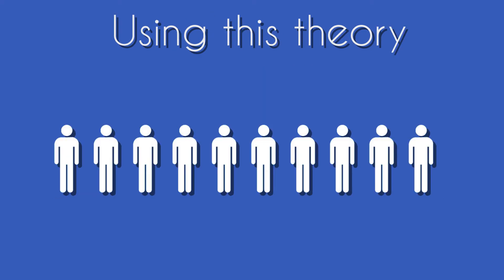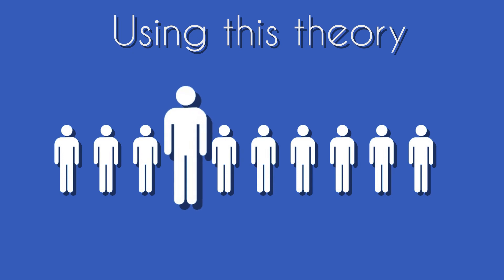Using this theory in filmmaking helps us know what conventions to use when building a product for a specific genre. The harder part is actually differentiating your product from others to make it more unique. You don't want it to just be another sci-fi or horror film — a unique film idea will help you stand out from the crowd while still maintaining a specific genre.